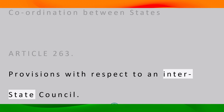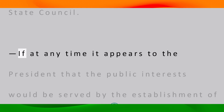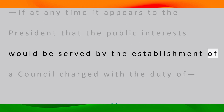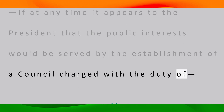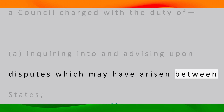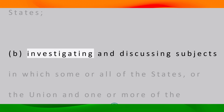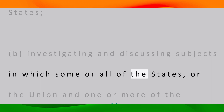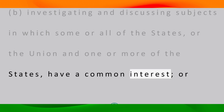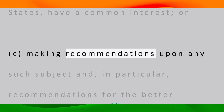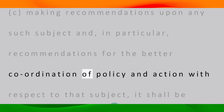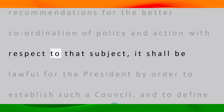Provisions with respect to an Interstate Council: If at any time it appears to the President that the public interests would be served by the establishment of a council charged with the duty of — (a) inquiring into and advising upon disputes which may have arisen between states; (b) investigating and discussing subjects in which some or all of the states, or the union and one or more of the states, have a common interest; or (c) making recommendations upon any such subject and in particular recommendations for the better coordination of policy and action with respect to that subject —